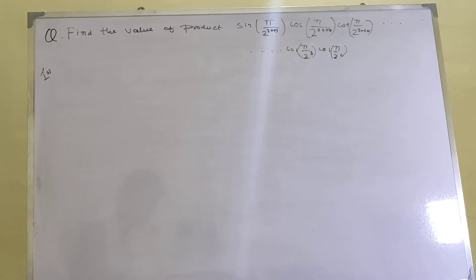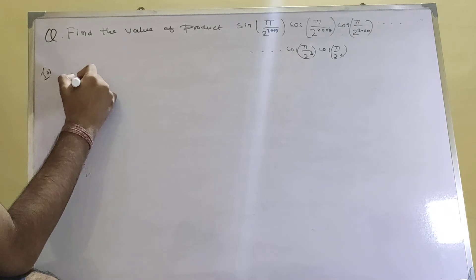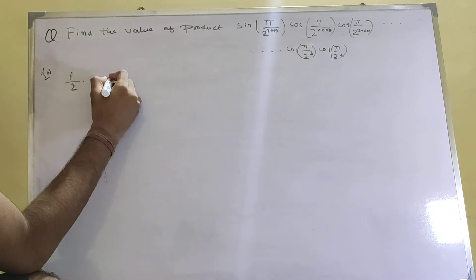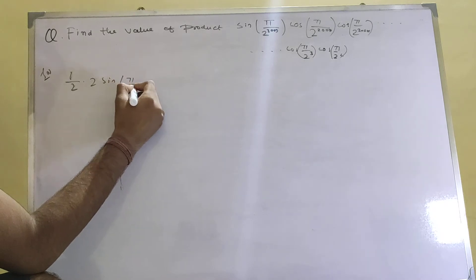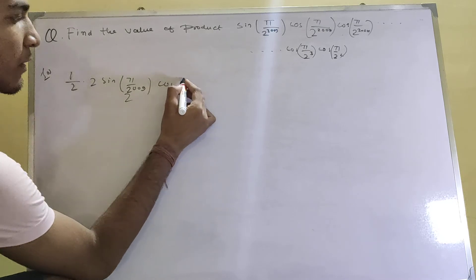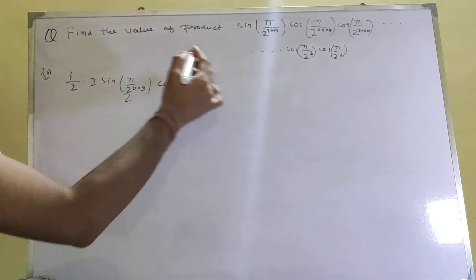Otherwise I'm giving it a try. In this question, first see that if you multiply and divide by 2 with the first two terms: 1/2 × 2sin(π/2)^2009 cos(π/2)^2009, which basically equals (1/2)sin(π/2)^2008.